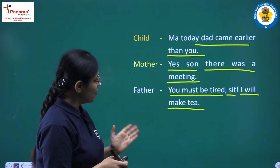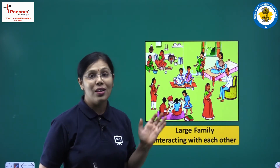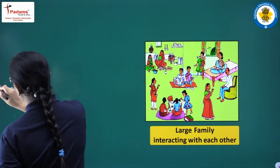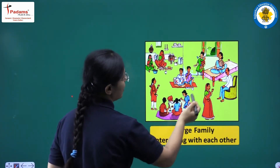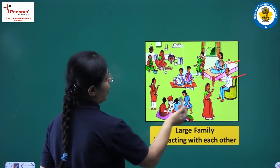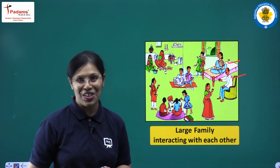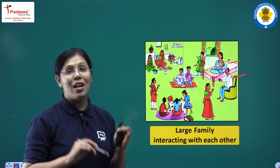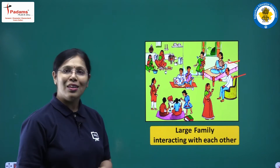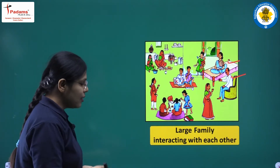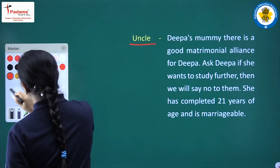Now let's see the other kind of family, which is a large family. In this picture you can see a large family where different people are interacting with each other — father, mother, three aunts, and many children of different age groups. In a large family there are many people to interact with, while in a small family there are only a few. Let's see the conversation going on in this large family.